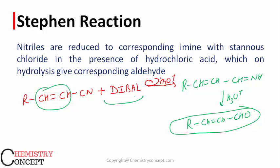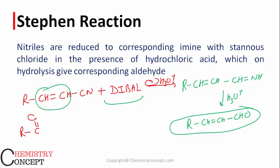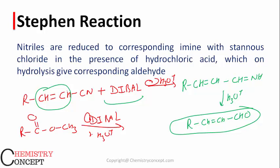So using DIBAL-H gives the advantage that any unsaturation present will not be affected. Similarly, if rather than a nitrile we use an ester, that can also be reduced using DIBAL-H followed by hydrolysis to give RCHO (aldehyde). These are the main reactions used for the preparation of aldehydes.